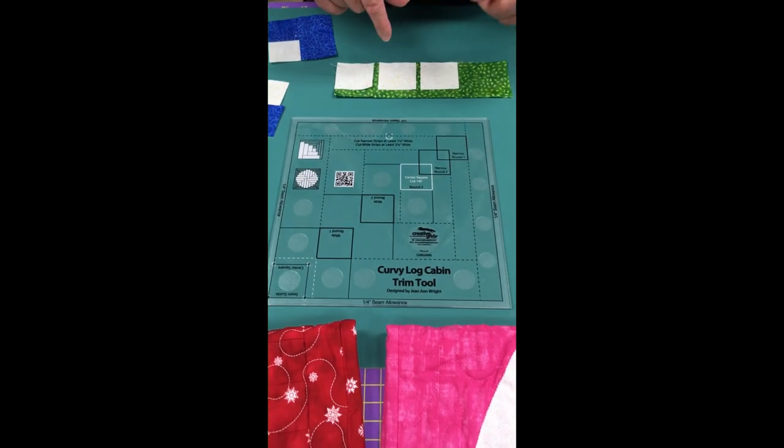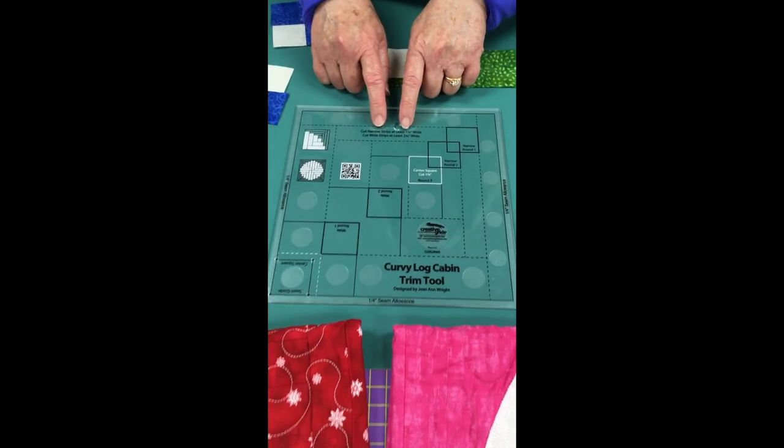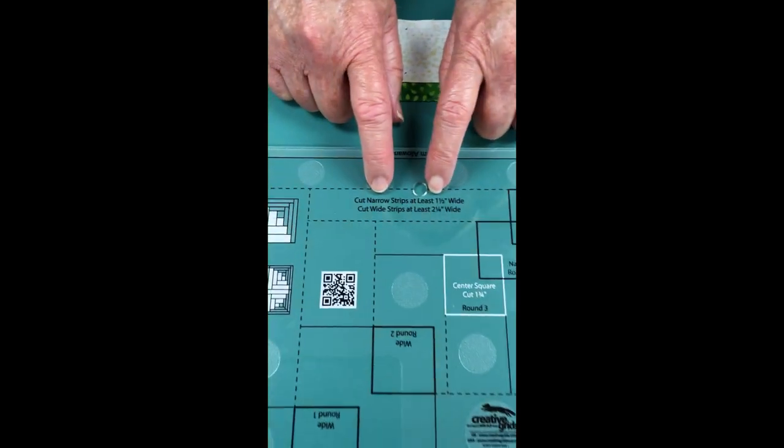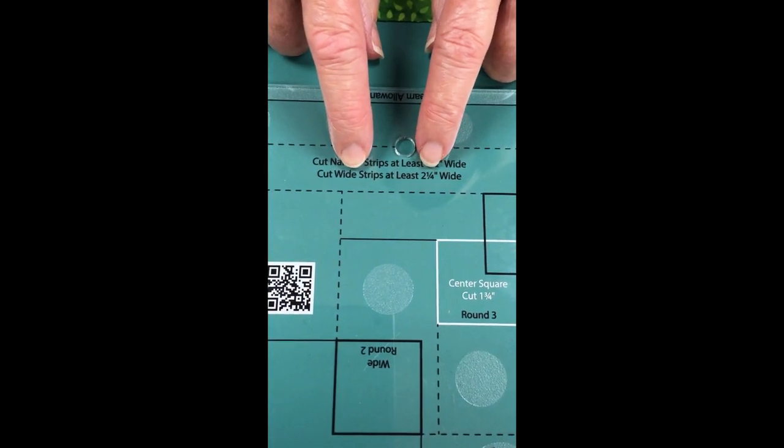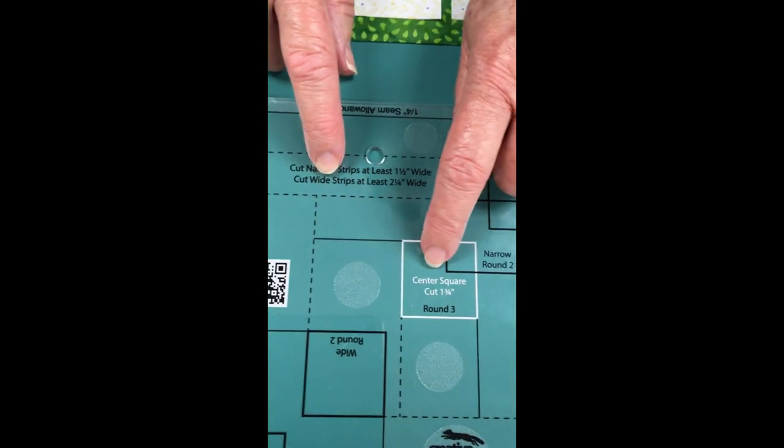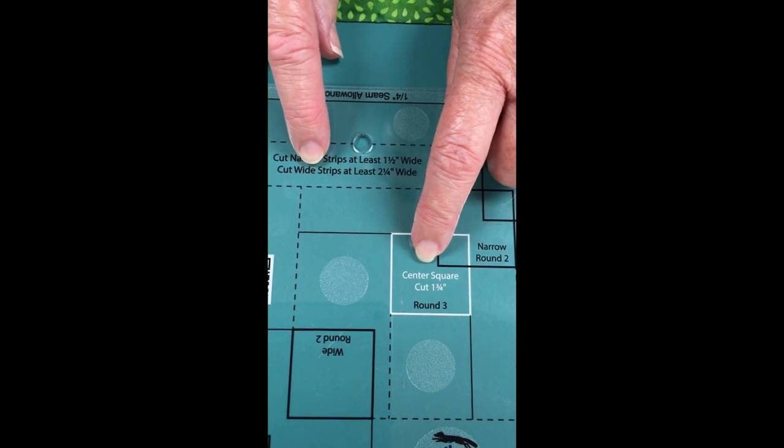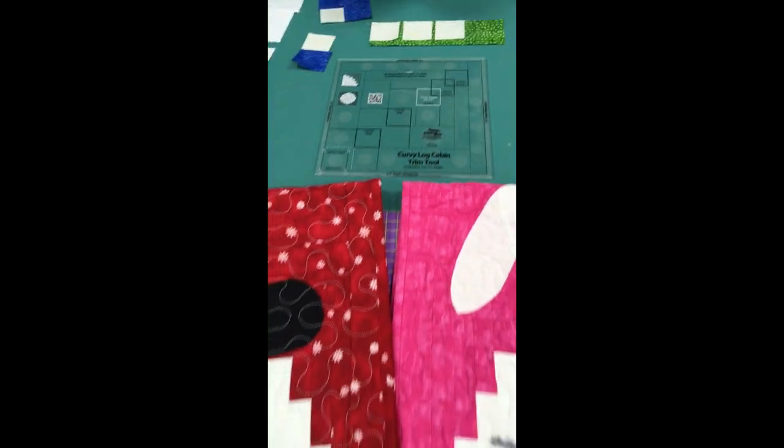The ruler is nicely marked, showing the minimum width of your narrow strips, the minimum width of your wider strips, and the size for your center square. Everything is right on the ruler so you don't have to look them up later.